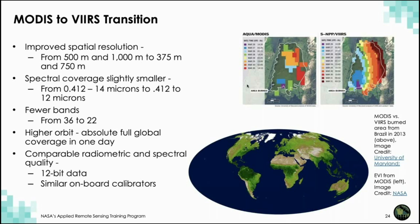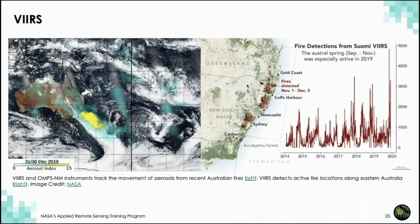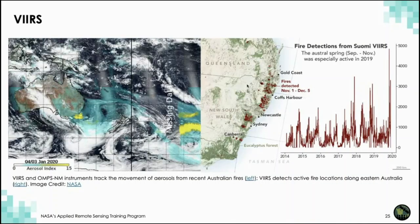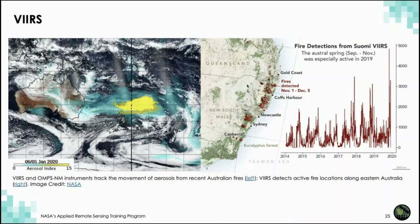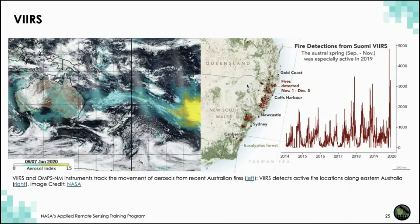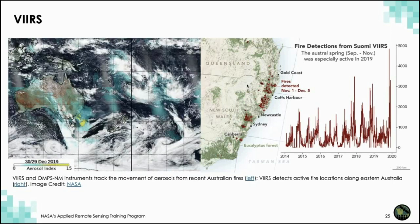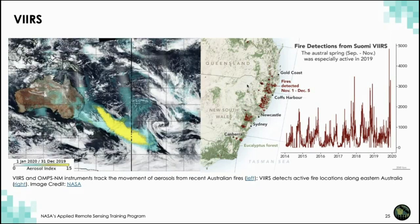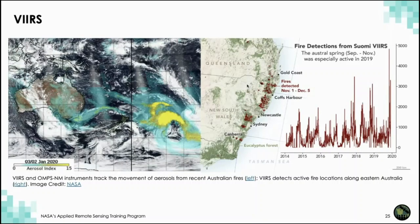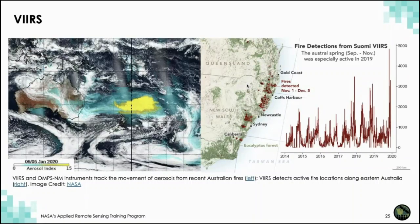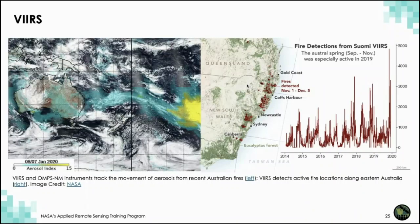A recent example of VIIRS data comes from the fires burning in Australia. The animation on the left shows smoke plumes coming off eastern Australia traveling across the globe in yellow, and the image on the right indicates the actively burning fires, especially in 2020.